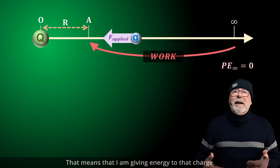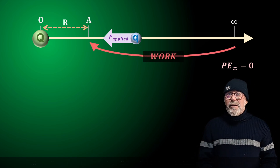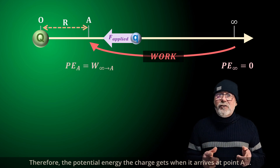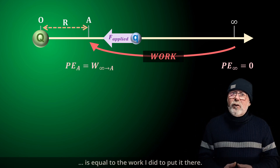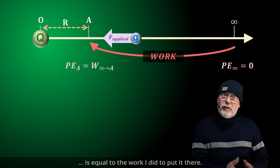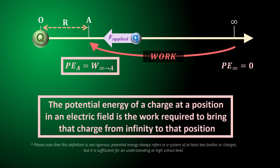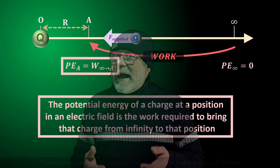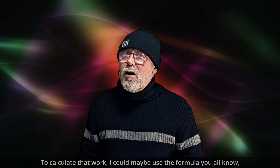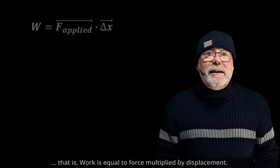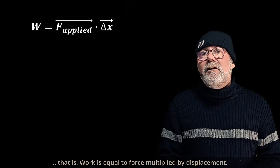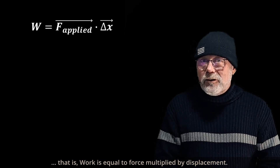That means that I am giving energy to that charge. Therefore, the potential energy the charge gets when it arrives at point A is equal to the work I did to put it there. To calculate that work, I could use the formula that work equals force multiplied by displacement.